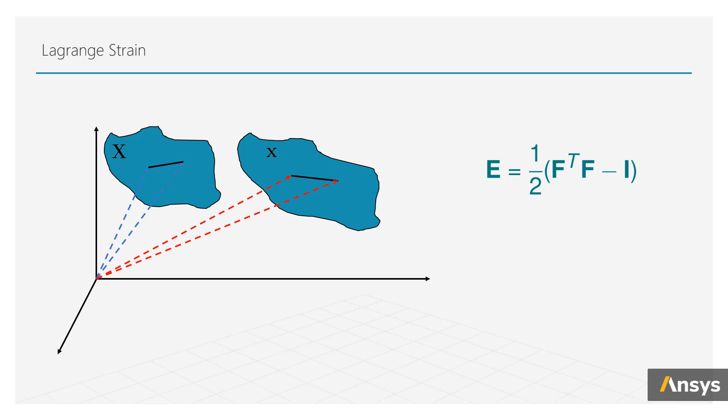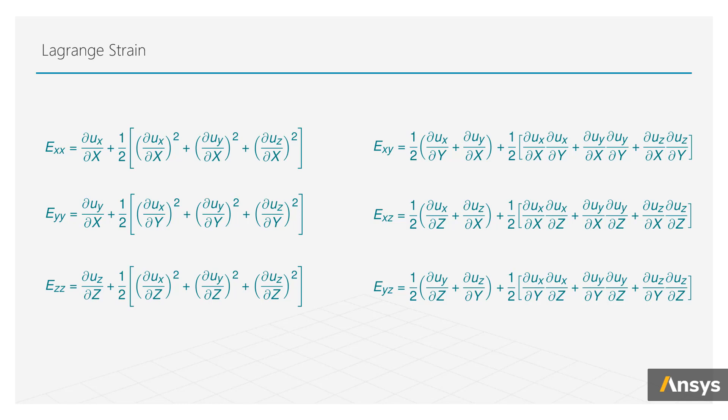Since F is written as a function of displacement field, we'll substitute that relation here and expand the definition of large strain. Once we do that, this is what the individual components of the Lagrange strain tensor look like.